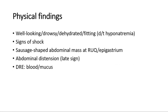On physical examination, the child's appearance depends on their stage of presentation — they might be well-looking, drowsy, or if late stages, dehydrated or even fitting due to electrolyte imbalance after vomiting, such as hyponatremia (low sodium levels). Look for signs of shock. On inspection, we expect to see a sausage-shaped abdominal mass at the right upper quadrant or epigastric area, which is a typical finding in intussusception. They might have abdominal distension as a late sign of intestinal obstruction. On digital rectal examination, we might be able to see blood or mucus.